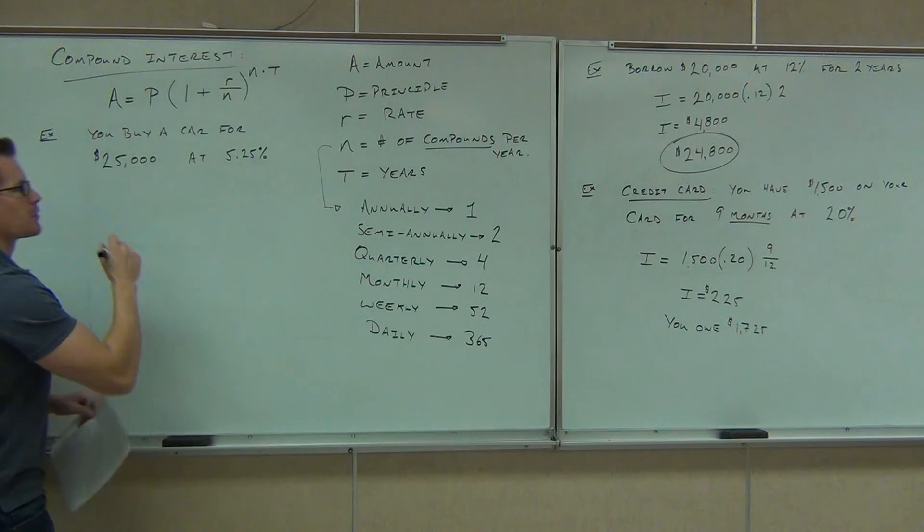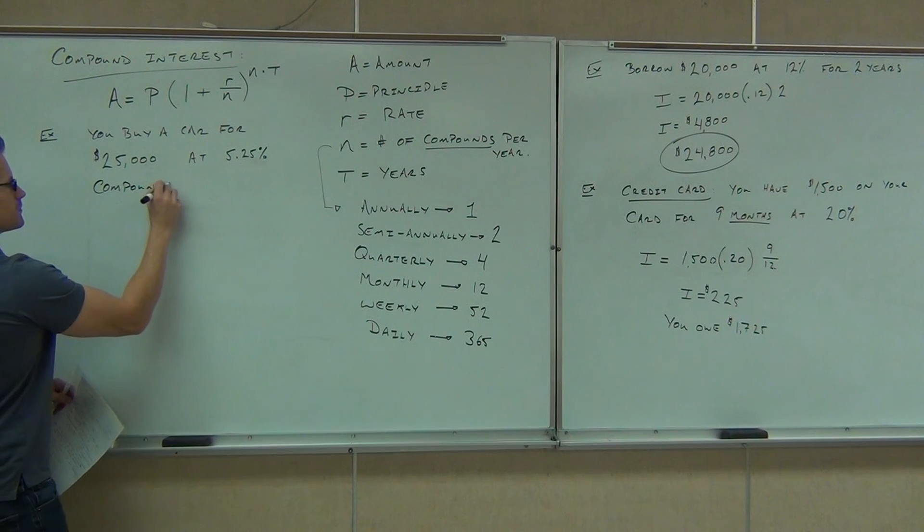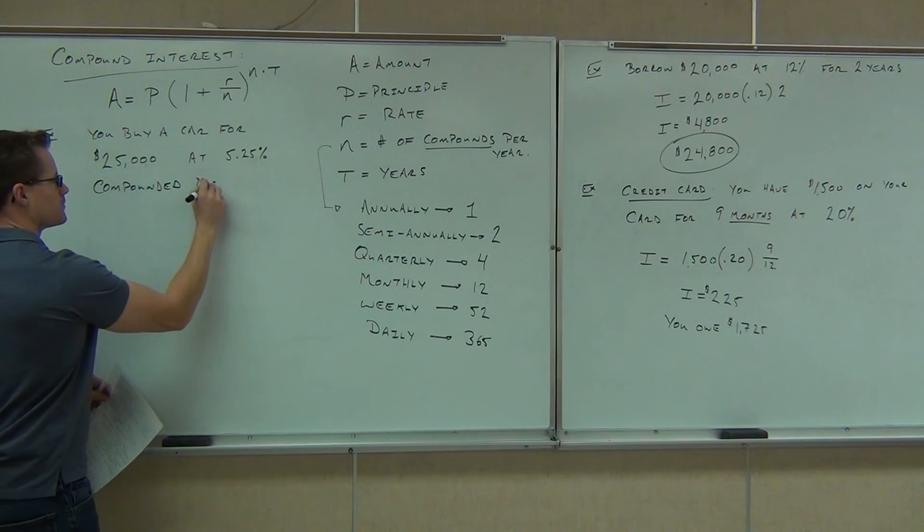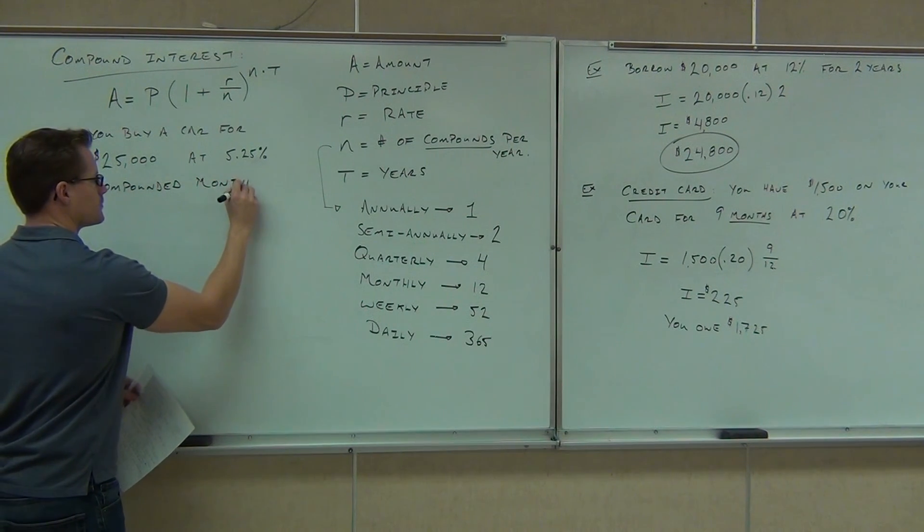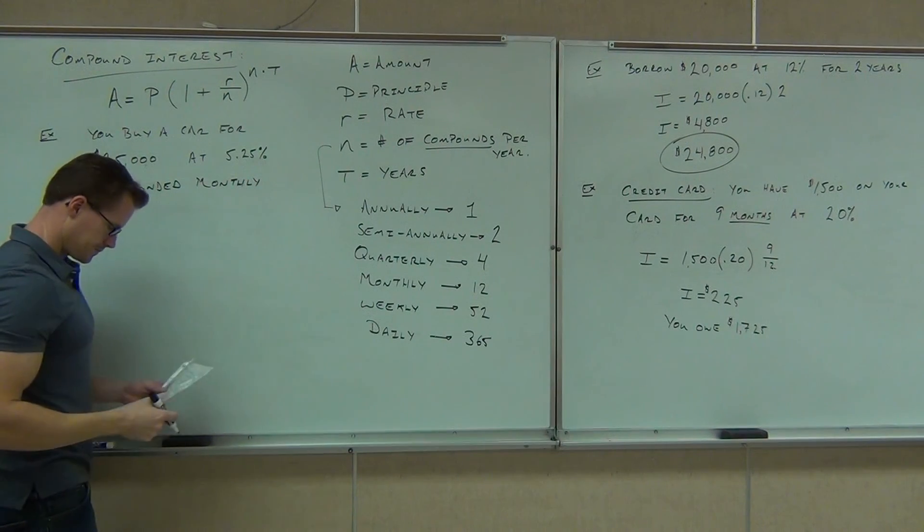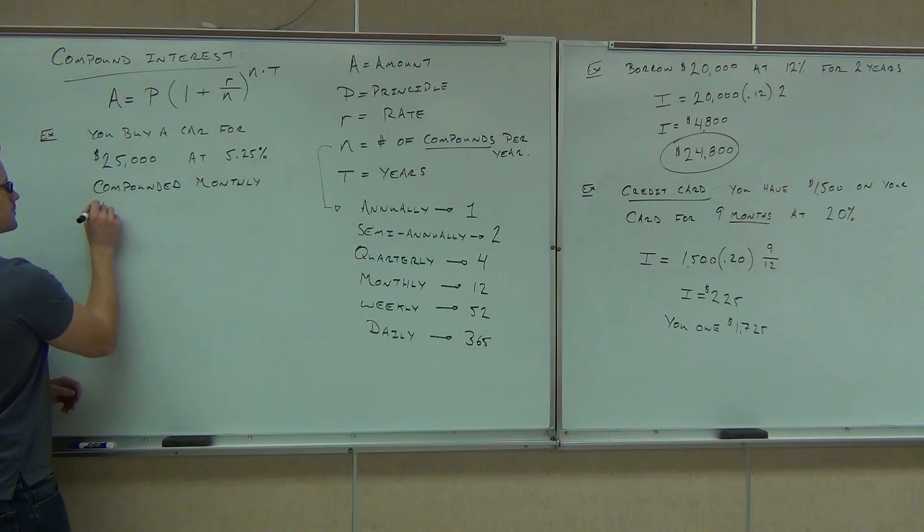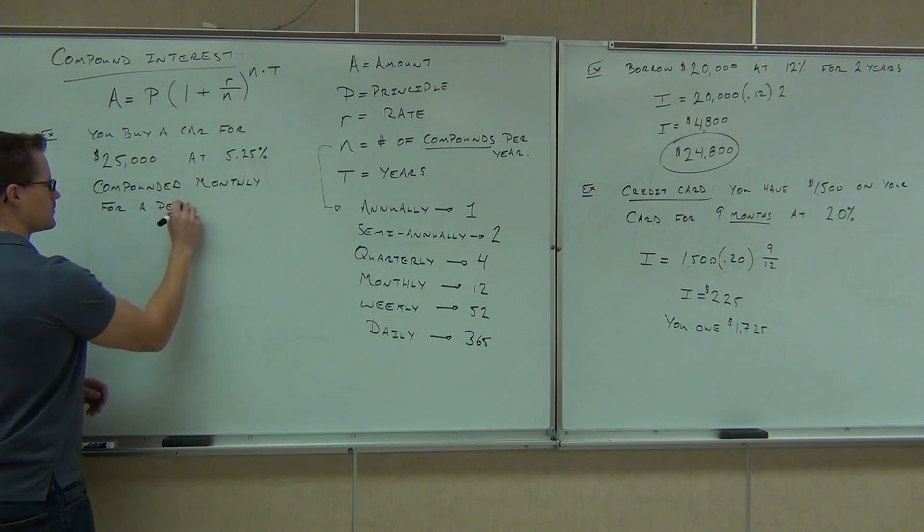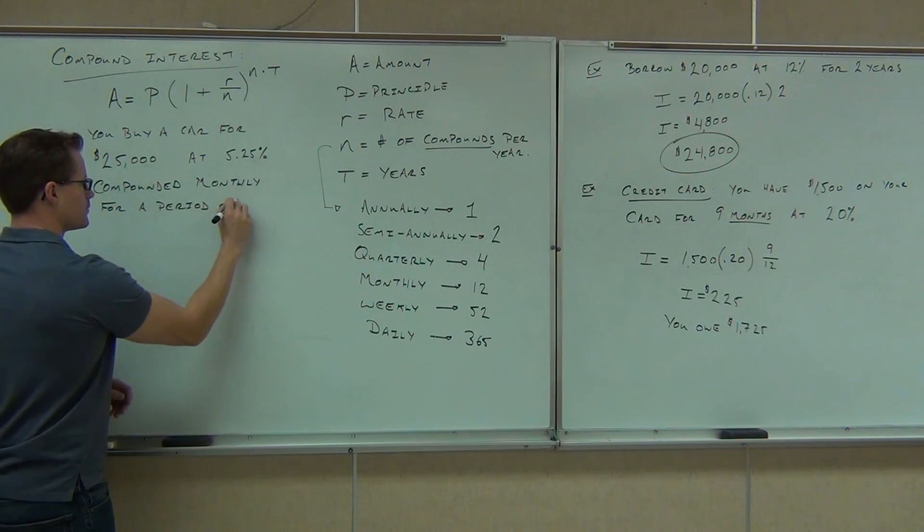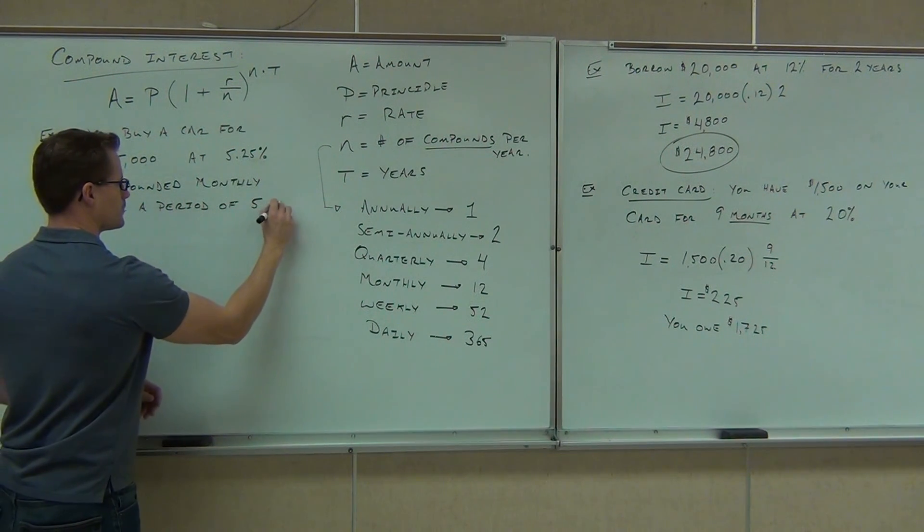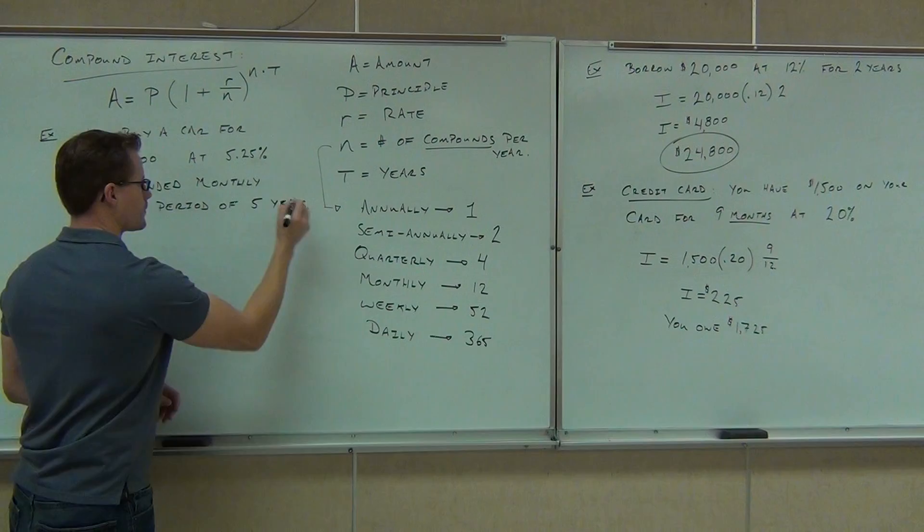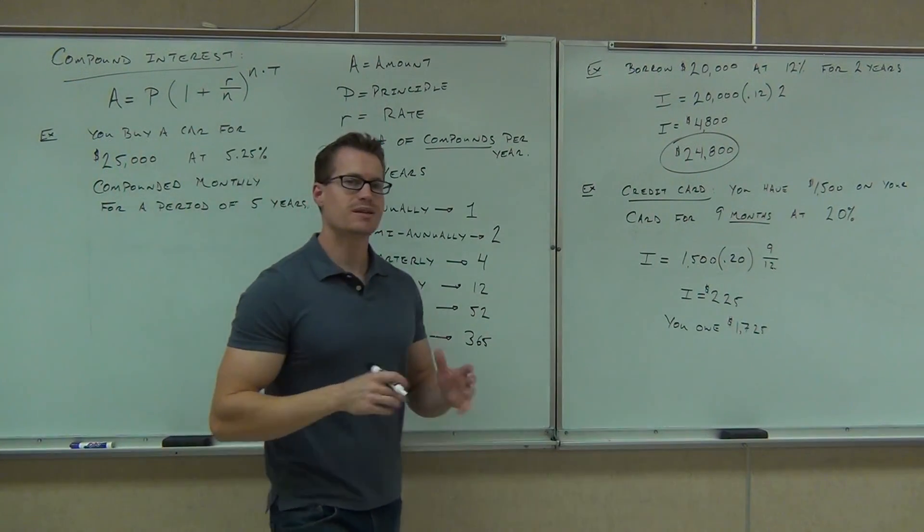So you buy a car for $25,000 and they say your interest rate is going to be 5.25%. And they say it's compounded monthly for a period of five years. What I want to know is this. Let's say you have...